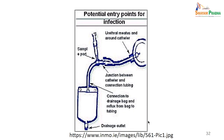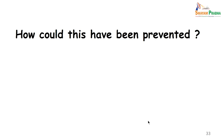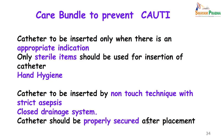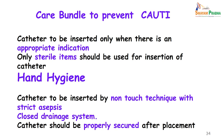These are the three important sites where infection can occur in a catheterized patient. To prevent the infection in Raju, care bundles for preventing CAUTI should be applied: the catheter should be inserted only when there is an appropriate indication — which in Raju's case was appropriate. Only sterile items should be used for insertion and hand hygiene followed. The catheter should be inserted by non-touch technique with strict asepsis, there should be a closed drainage system, and the catheter should be properly secured after placement.